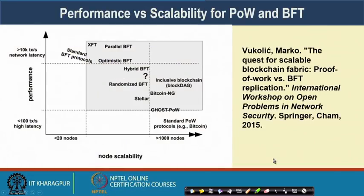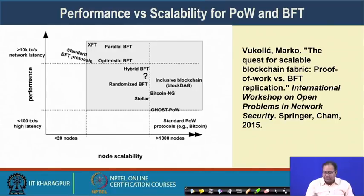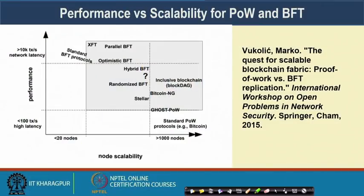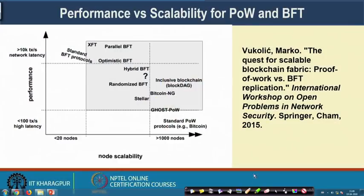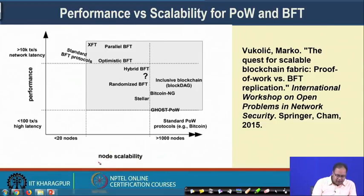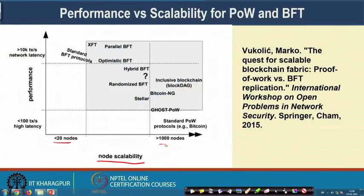There is an interesting paper — most likely a technical report — by Marko Vukolic, a researcher at IBM Zurich. The paper is titled 'The Quest for Scalable Blockchain Fabric: Proof-of-Work vs. BFT Replication.' Vukolic gives a nice diagram that places all consensus algorithms on a two-dimensional scale: on the X-axis is node scalability — how many nodes the consensus protocol can support, from fewer than 20 to more than 1000 — and on the Y-axis is performance in terms of transaction throughput.